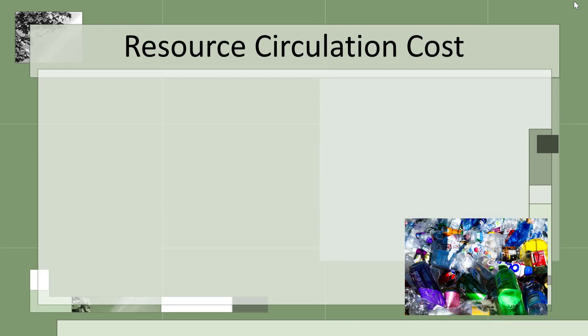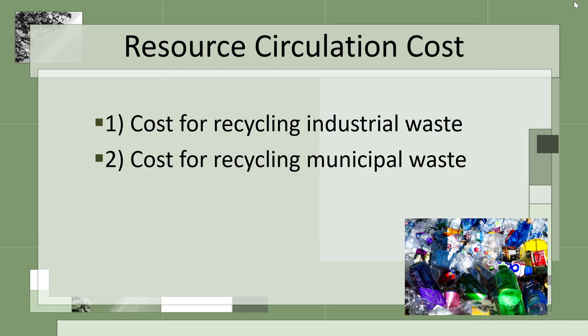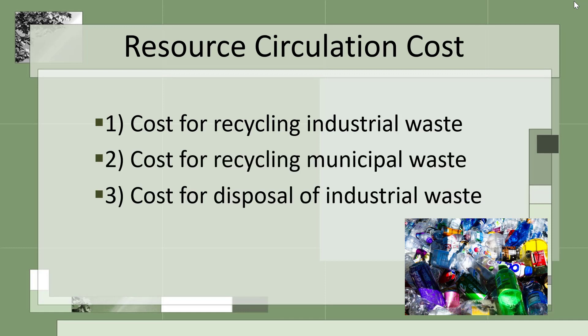Resource circulation cost includes cost for recycling industrial waste, cost for recycling municipal waste, and cost for disposal of industrial waste. This relates to the three R mantra — reduce, recycle, and reuse — so all costs relating to those R mantras fall under resource circulation cost.